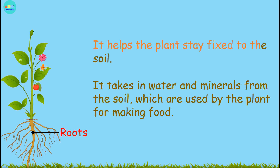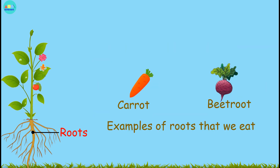Roots help the plant stay fixed to the soil. Roots take in water and minerals from the soil, which are used by the plant for making food. Carrots and beetroot are examples of roots that we eat.